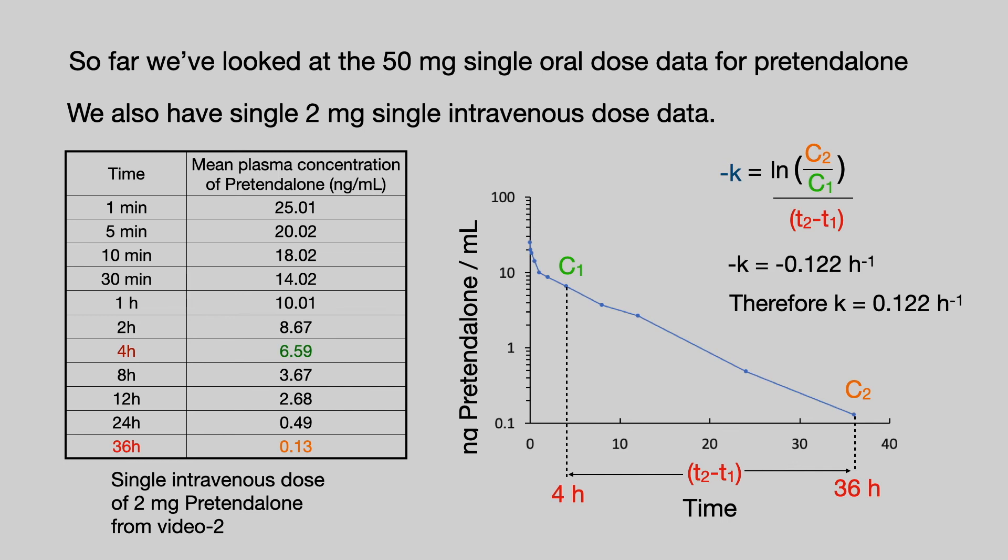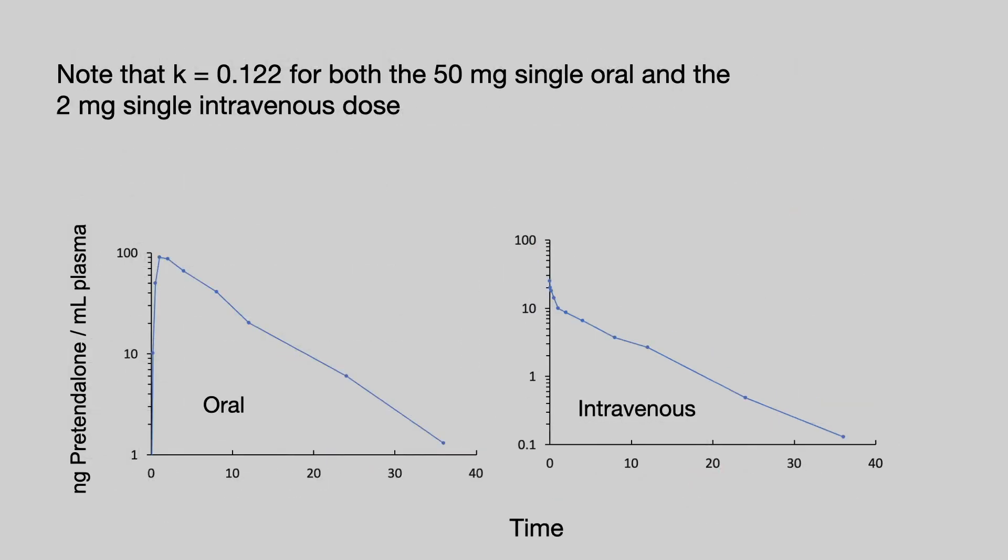If we take drug concentration and time points from that plot, put it into our equation, we find that the elimination rate constant is 0.122 per hour. Now that number might be familiar because the elimination rate constant for both the oral and intravenous dose is the same.